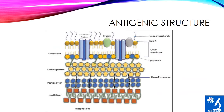Now the antigenic structure — the cell wall of mycobacteria is made up of several layers: mycolic acid, arabinogalactan, peptidoglycan layer, and a lipid bilayer. Mycolic acid is made up of fatty acids and is responsible for the acid-fastness of the bacilli. Arabinogalactan helps Mycobacterium tuberculosis survive within macrophages. The peptidoglycan layer is responsible for maintaining rigidity and shape of the bacteria. The lipid bilayer is also known as the cell membrane. One important antigen is lipoarabinomannan, which helps the bacilli attach to host cells.